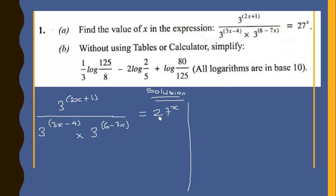We find a common base that we can express all the numbers to a certain index. The highest common factor of 3 and 27 is 3. So we express all the numbers to base 3 to a certain index.